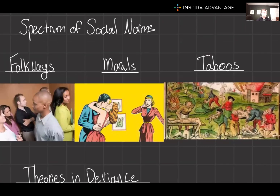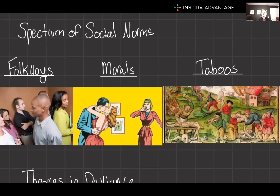Beginning with the spectrum of social norms: imagine entering an elevator and facing the crowd instead of the door. This would be a folkway violation that raises eyebrows but carries no real moral weight. Contrast this with more severe breaches, like breaking mores and taboos — such as infidelity or cannibalism in most societies — which elicit stronger social reactions and in many cases legal repercussions.